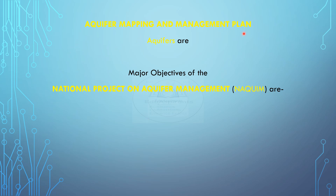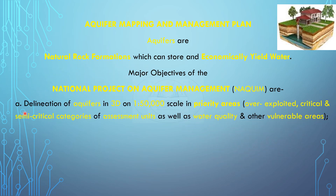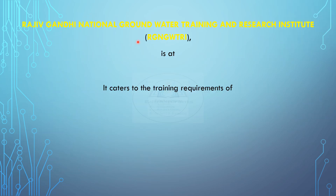Aquifer mapping and management plan: aquifers are natural rock formations which can store and economically yield water. Important to remember are the major objectives of the National Project on Aquifer Management, NACWIM. These include delineation of aquifers in 3D on 1:250,000 scale in priority areas — i.e., overexploited, critical and semi-critical categories of assessment units — as well as water quality and other vulnerable areas. Detailed characterization of aquifers including quality of groundwater and formulation of aquifer management plans. The Rajiv Gandhi National Groundwater Training and Research Institute, RGNGWTRI, is located at Raipur, Chhattisgarh — which is also the capital of Chhattisgarh.